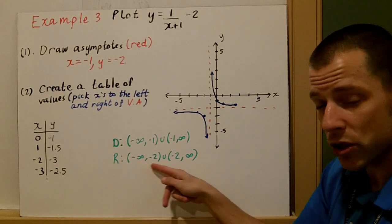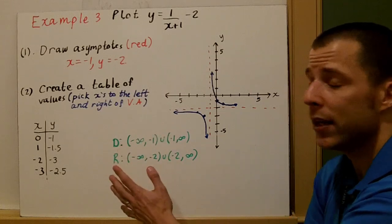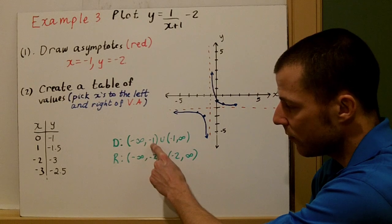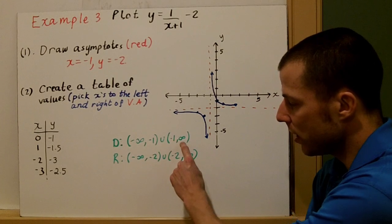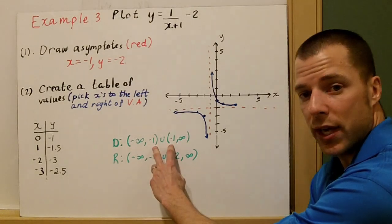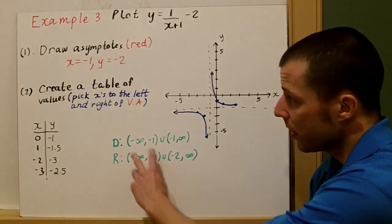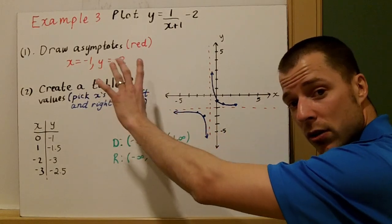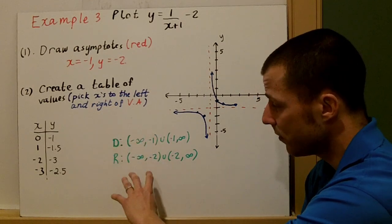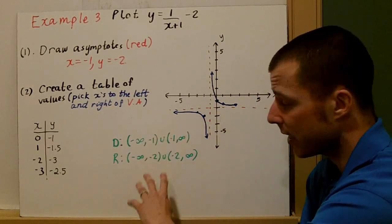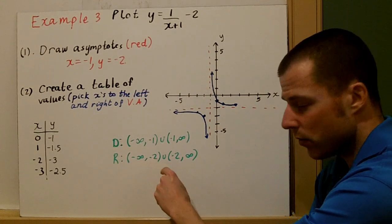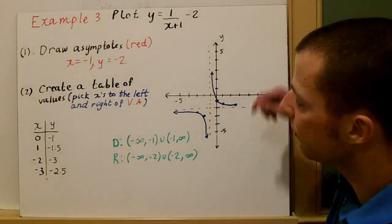With the domain restrictions, x can't be negative 1, so the domain is negative infinity to negative 1 union with negative 1 to infinity — parentheses mean negative 1 is excluded. For the range, our horizontal asymptote is at y equals negative 2, so we can't have an output of negative 2. The range goes from negative infinity to negative 2 union with negative 2 to infinity.